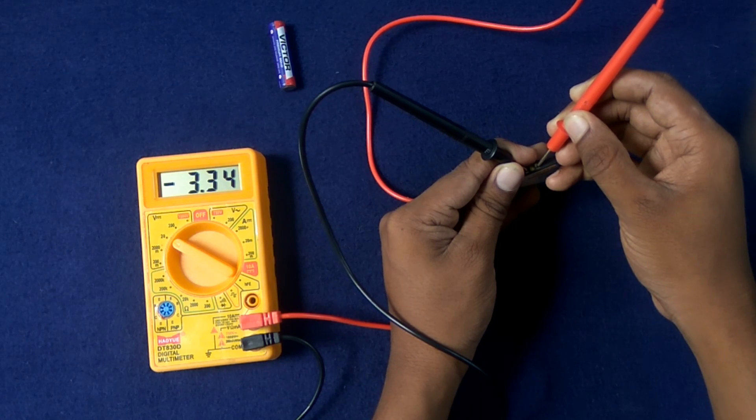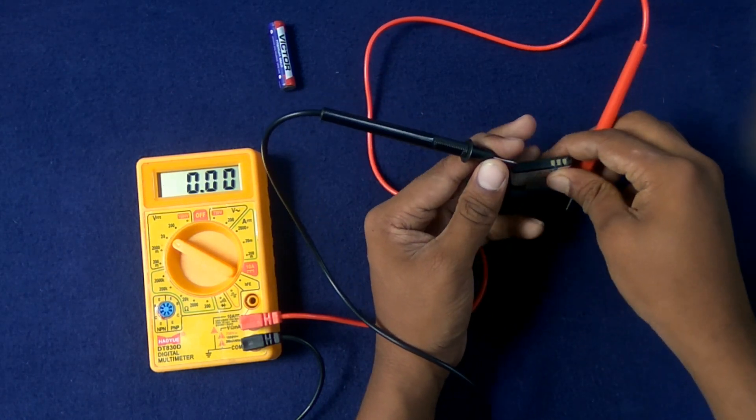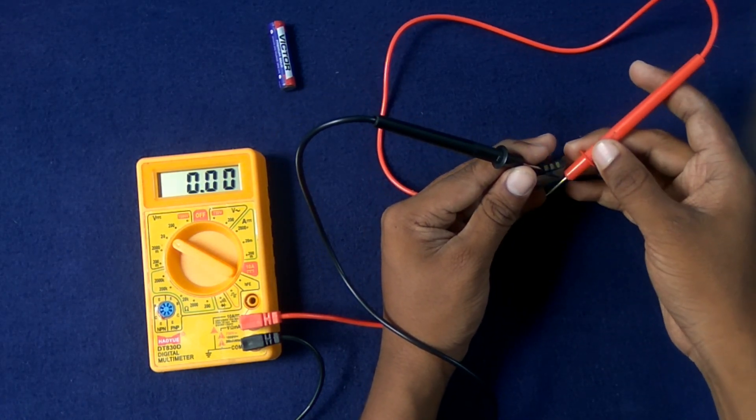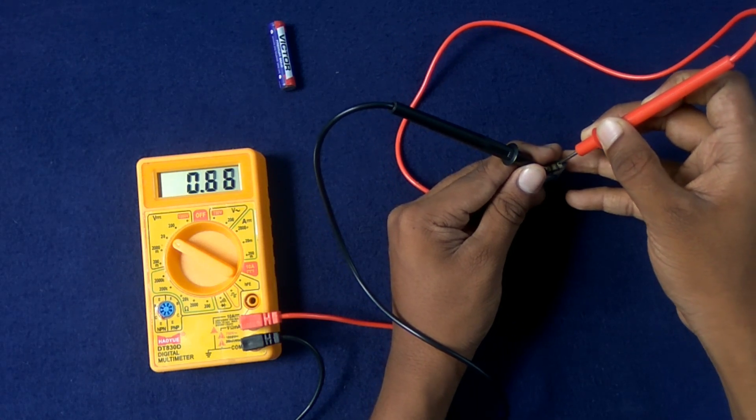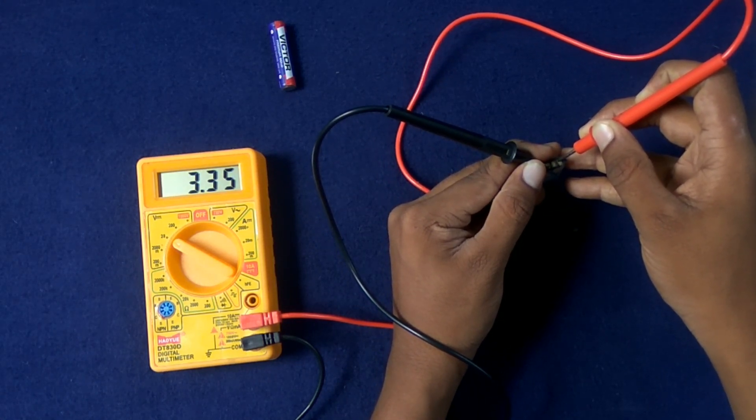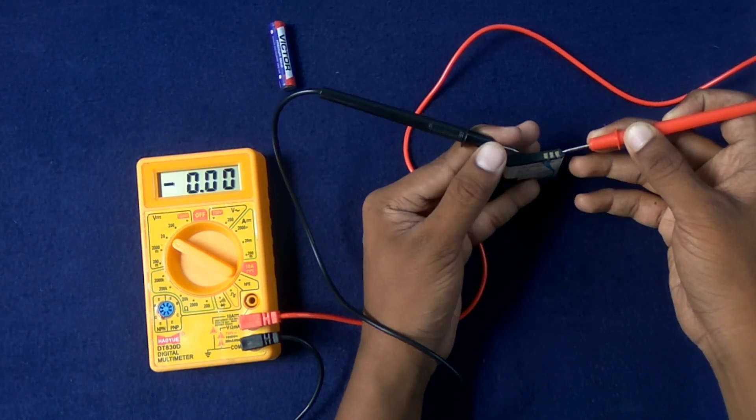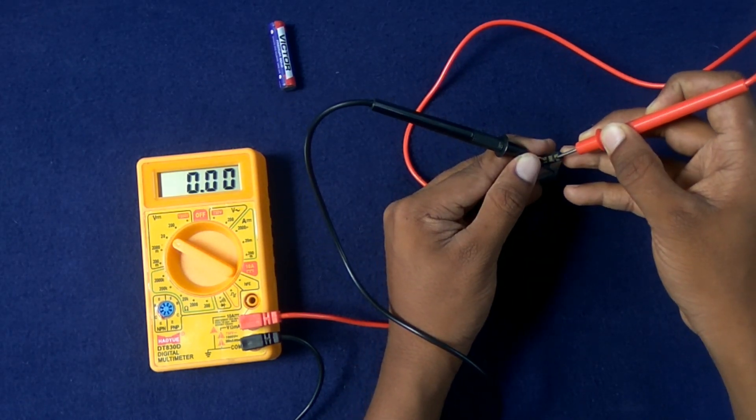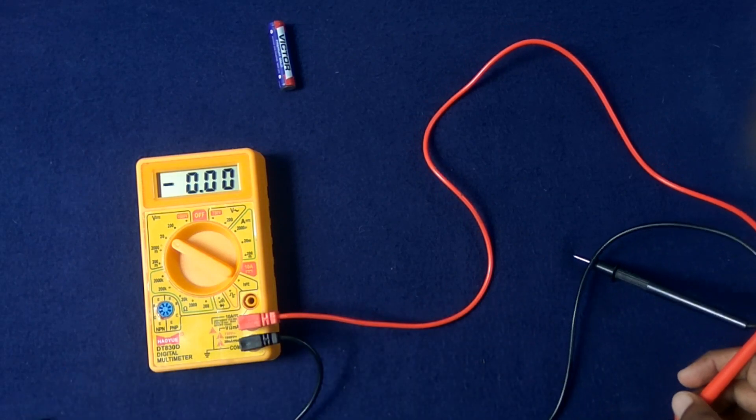It's showing a reading in minus. Let's switch the cords. Now that's correct. The red side is the positive and the black side is the negative one.